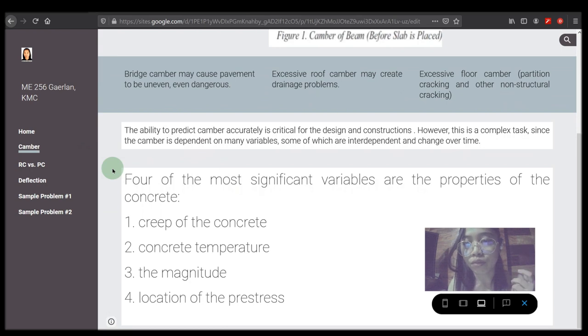We have four of the most significant variable properties of the concrete that must also be considered like creep of the concrete, concrete temperature, the magnitude, and the location of the prestress.